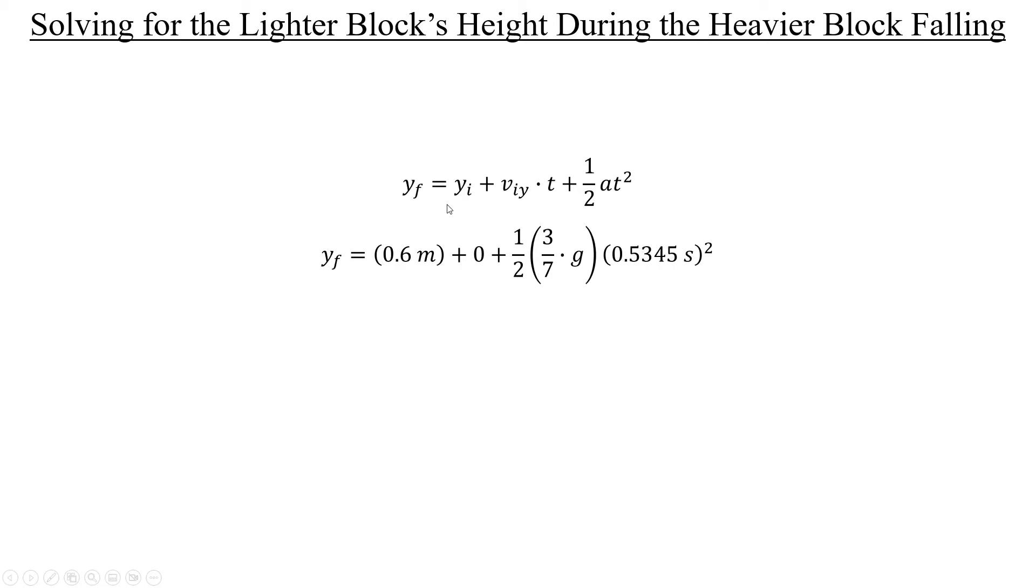And so by plugging in all of this information, we should be able to figure out how high the lighter block rose during this time period. And you should get, essentially, exactly 1.2 meters.